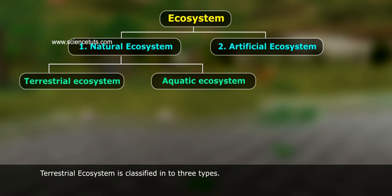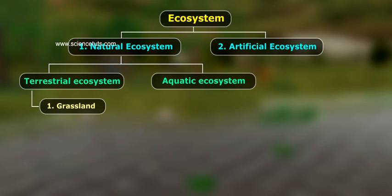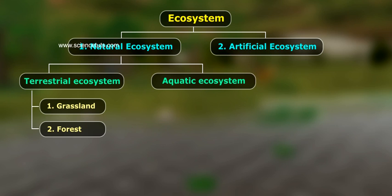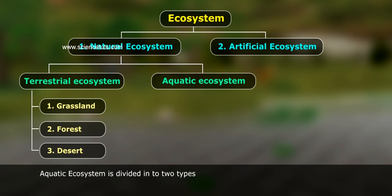Terrestrial ecosystem is classified into three types: Grassland Ecosystem, Forest Ecosystem, and Desert Ecosystem. Aquatic ecosystem is divided into two types.